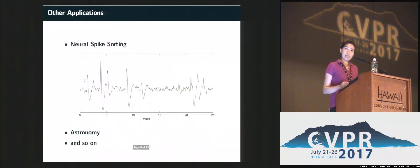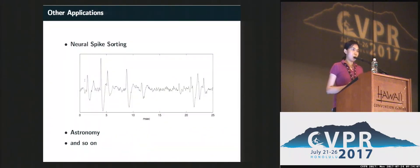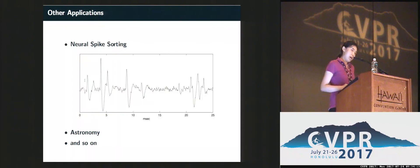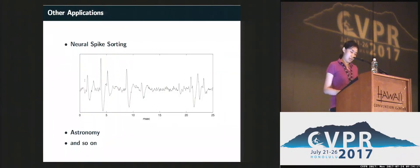A similar case arises in neural spike sorting, which is a one-dimensional blind deconvolution problem. For these scientific analyses, exact recovery of the ground truth is very important.